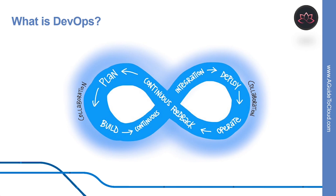Essential DevOps practices include agile planning, continuous integration, continuous delivery, and monitoring of applications. And DevOps is a continuous journey.